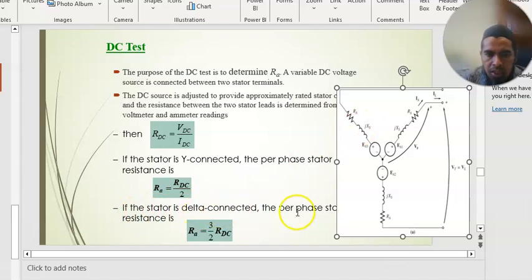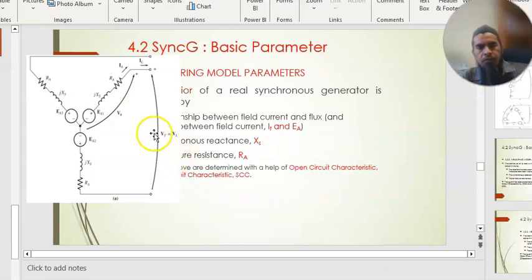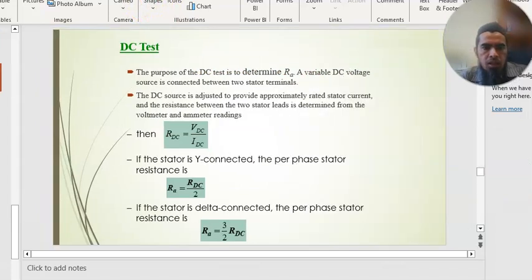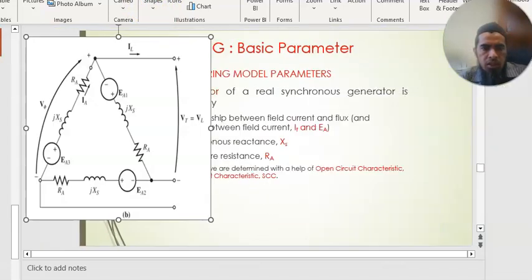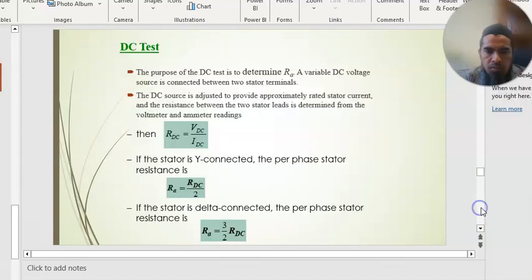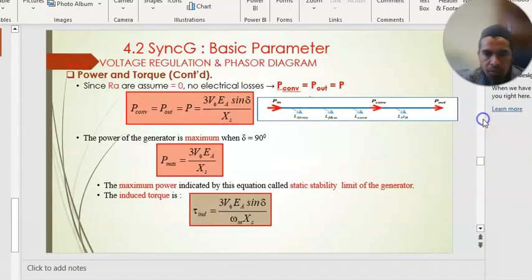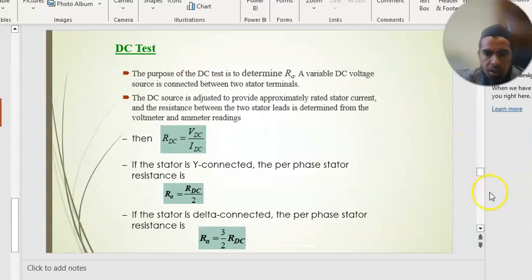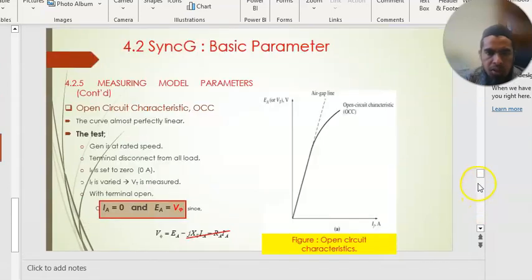Because if you measure from here to here, so it divide by two. And if you measure from here to the middle point, just divide by one. But for delta connected, the connection is on the delta. On the delta, you can see that you have to multiply by three, divide by two. That is the value of your RA. Because the arrangement is like this. The arrangement is in series. The connection is in series.